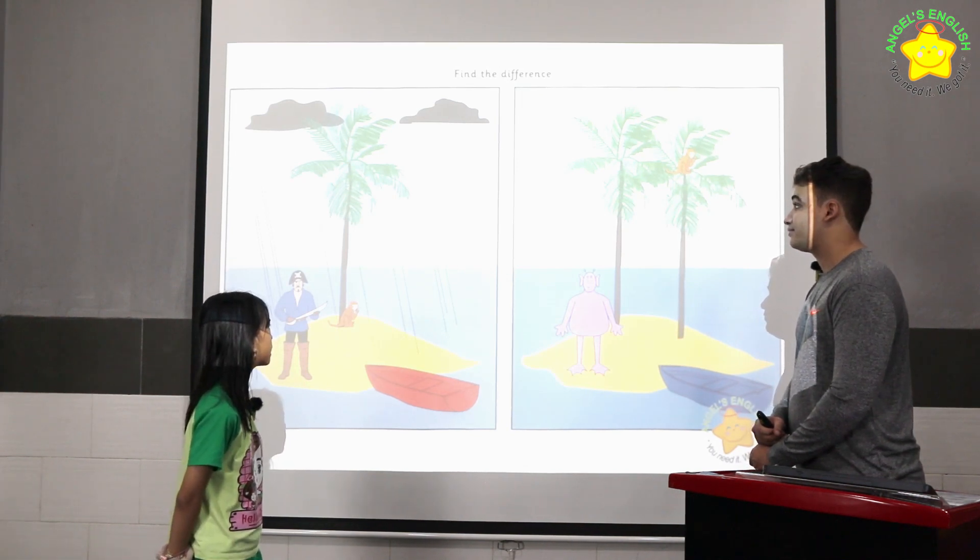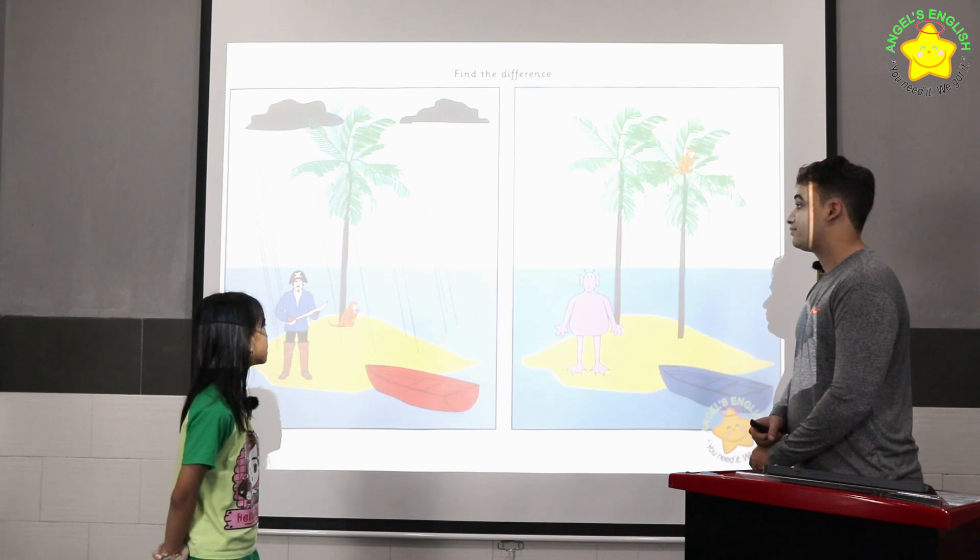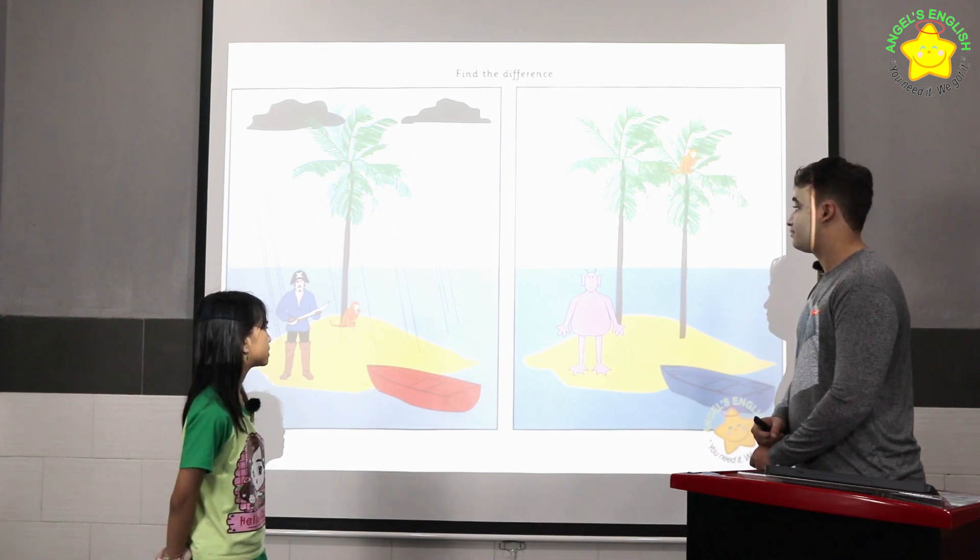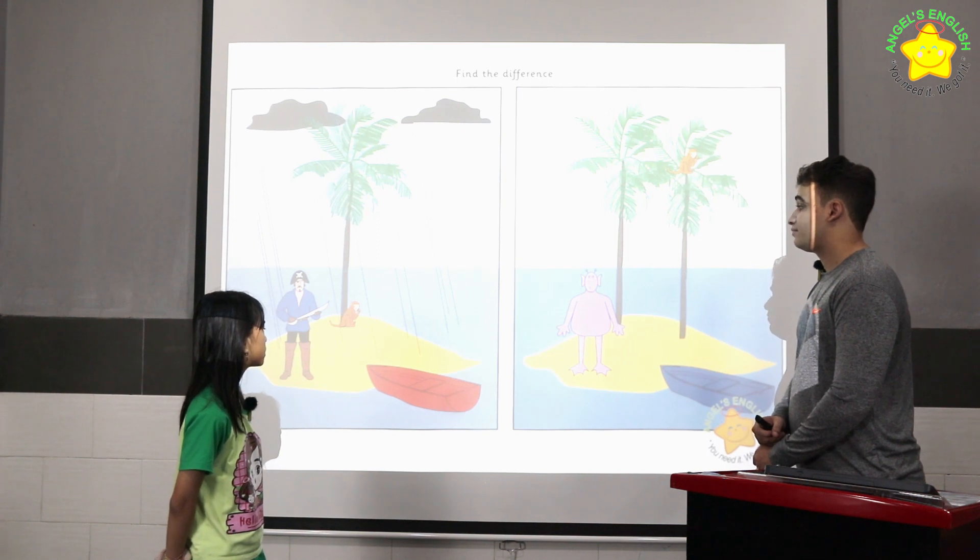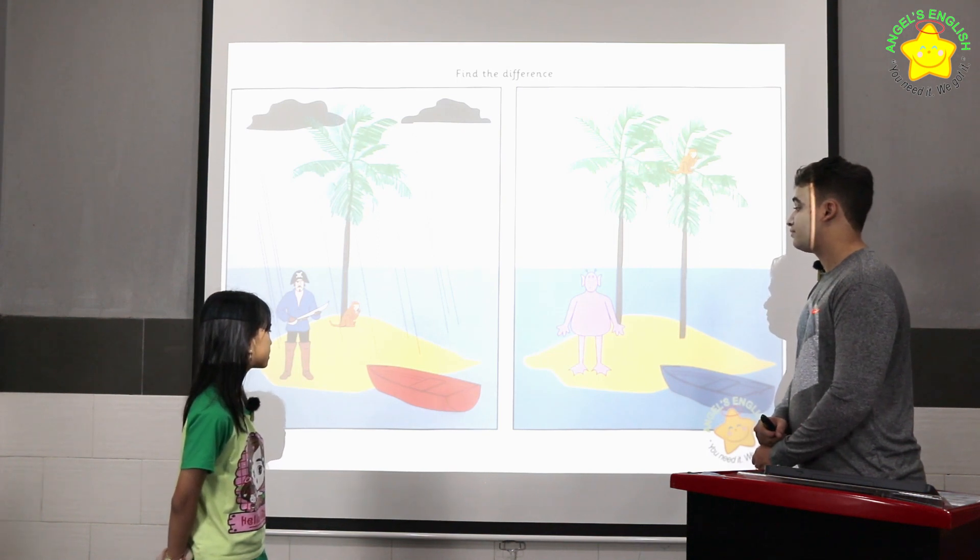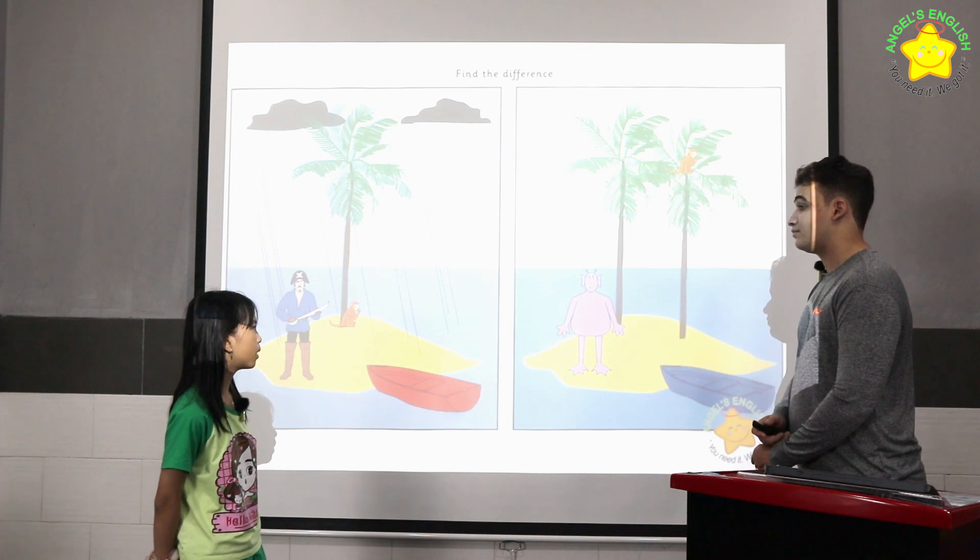In picture one, I can see one tree. But in picture two, I can see two trees. In picture one, the ball is red. But in picture two, the ball is blue.